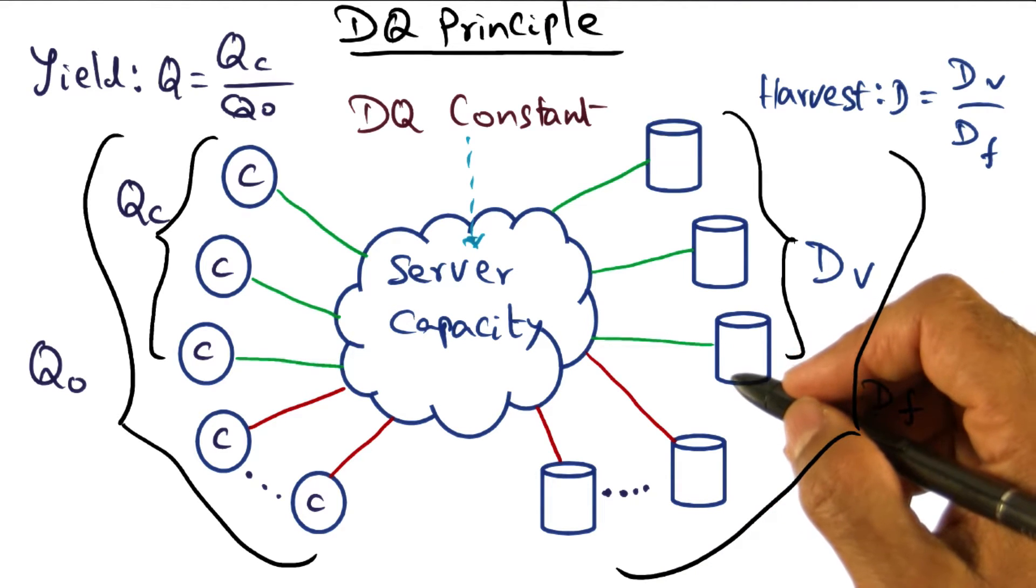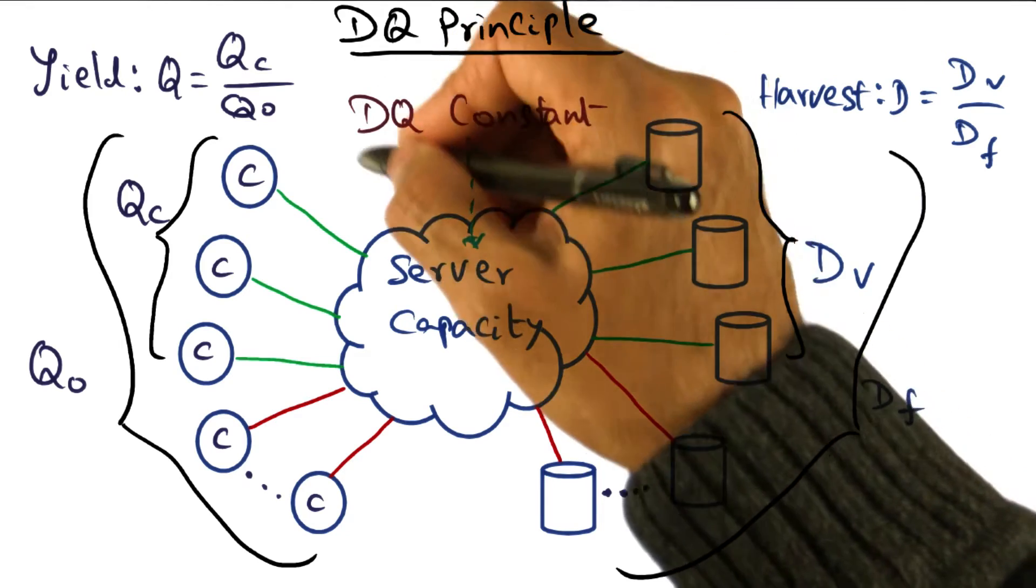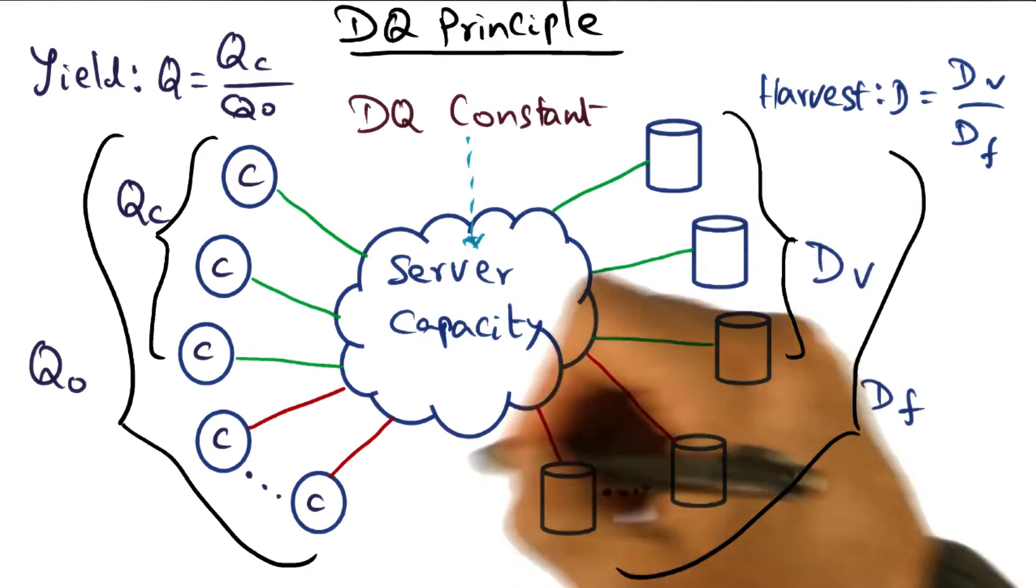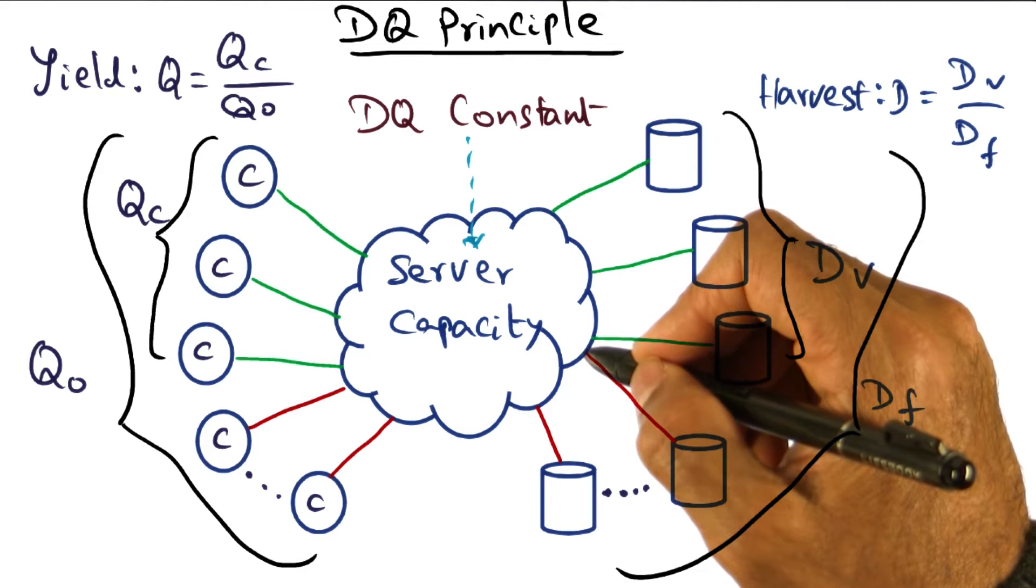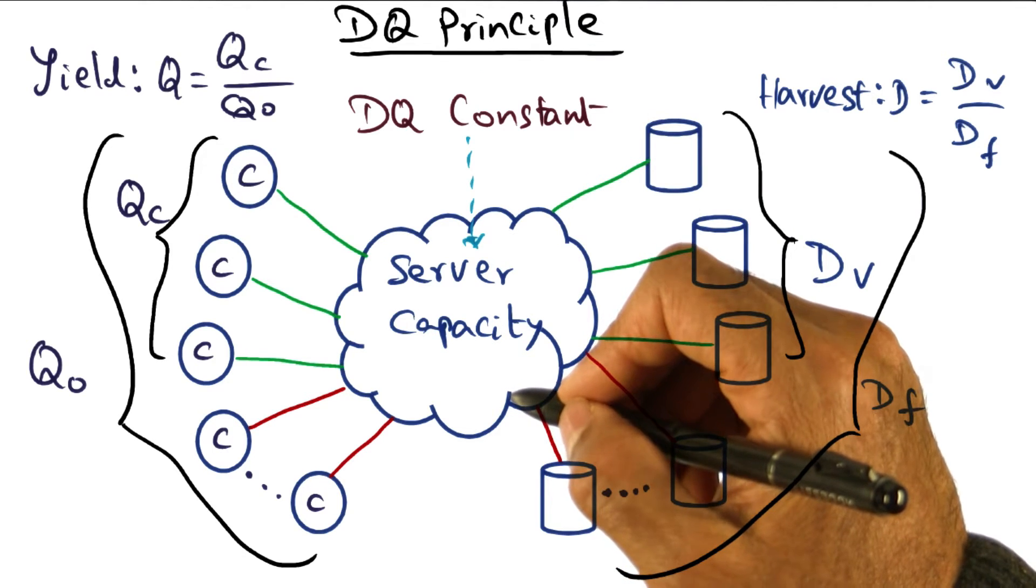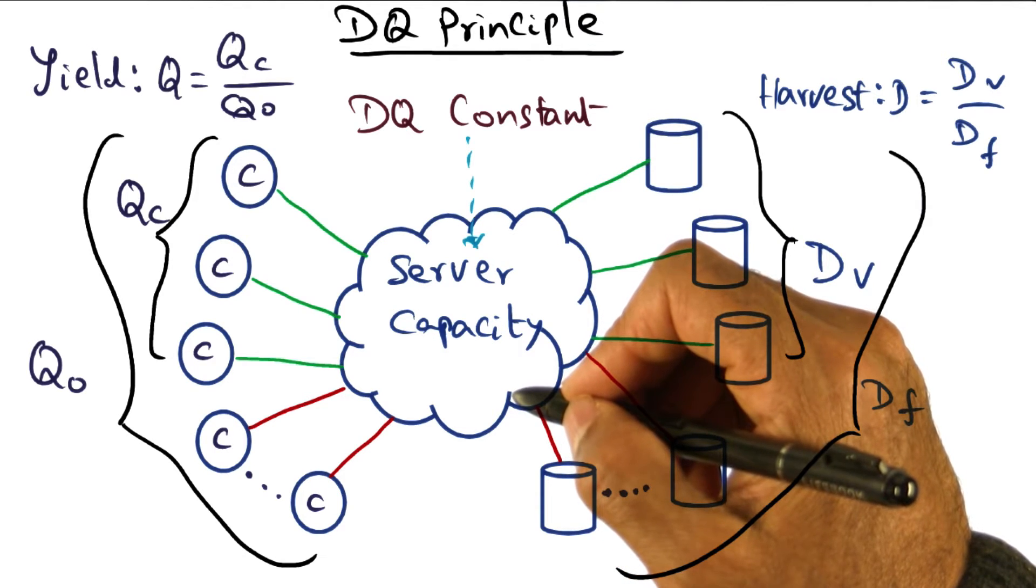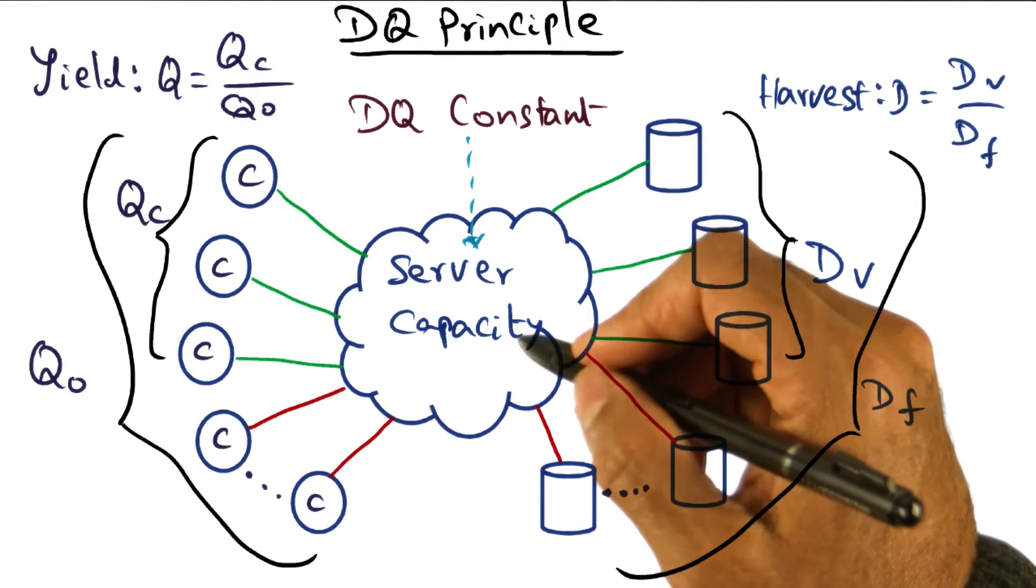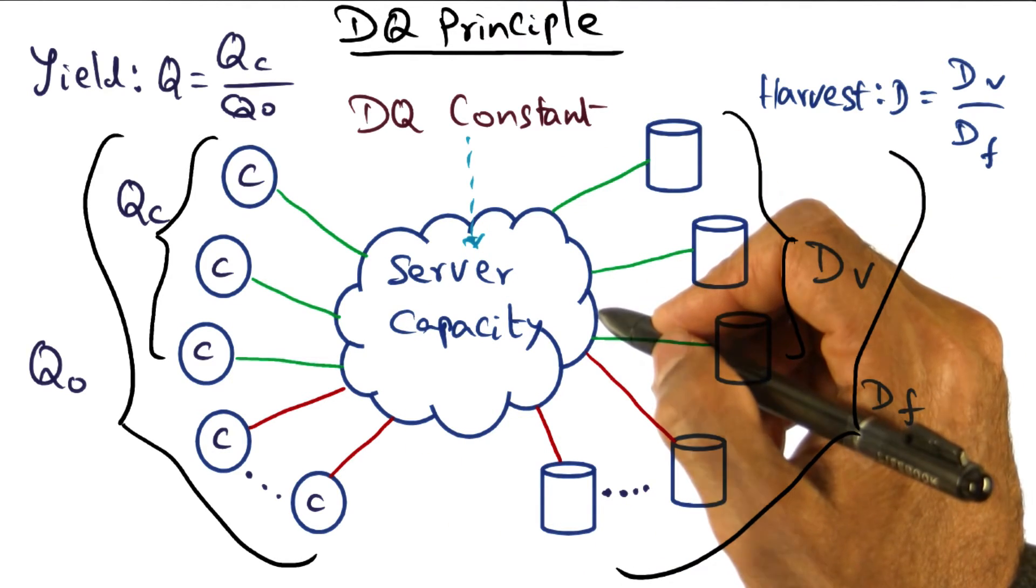But the important message I want to convey to you is that this DQ represents a system constant so far as the server is concerned in terms of the capacity. Given a particular capacity of the server, DQ is fixed. So as a system administrator, you have a choice of either sacrificing yield for harvest or harvest for yield. You cannot increase both the harvest and yield without increasing the server capacity.